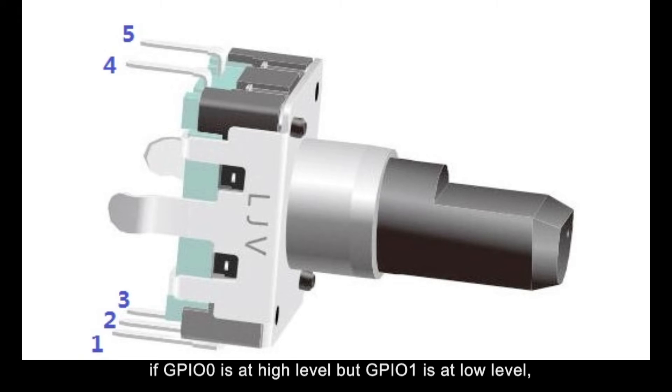If GPIO0 is at high level but GPIO1 is at low level, it indicates rotary encoder rotates anticlockwise.